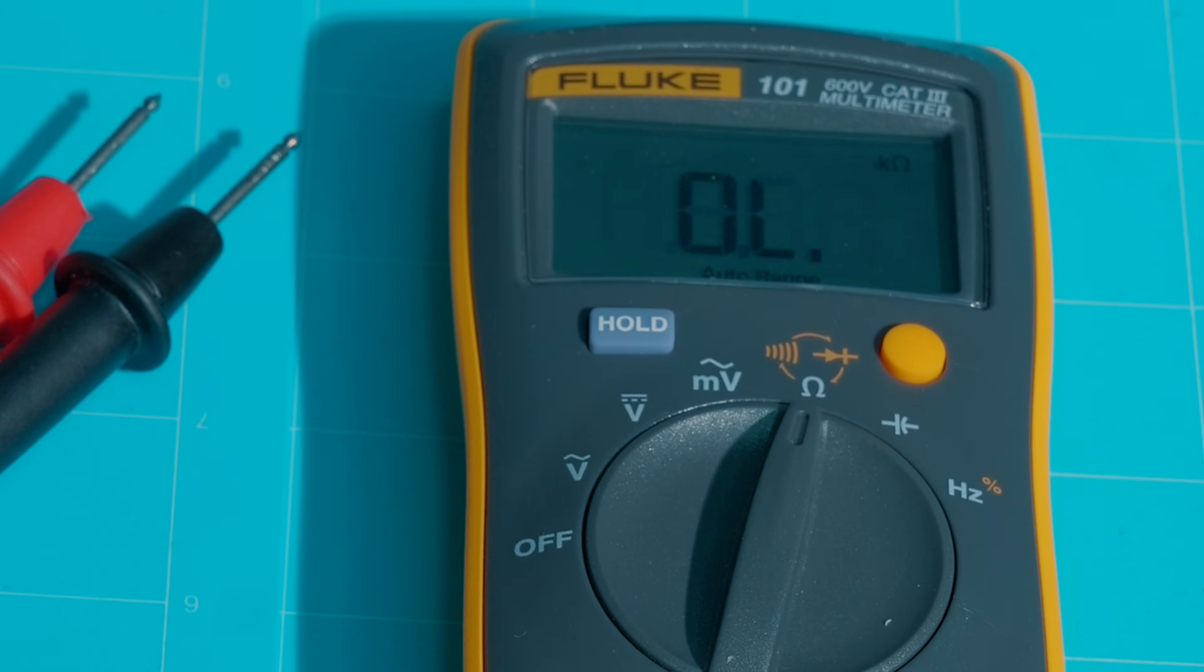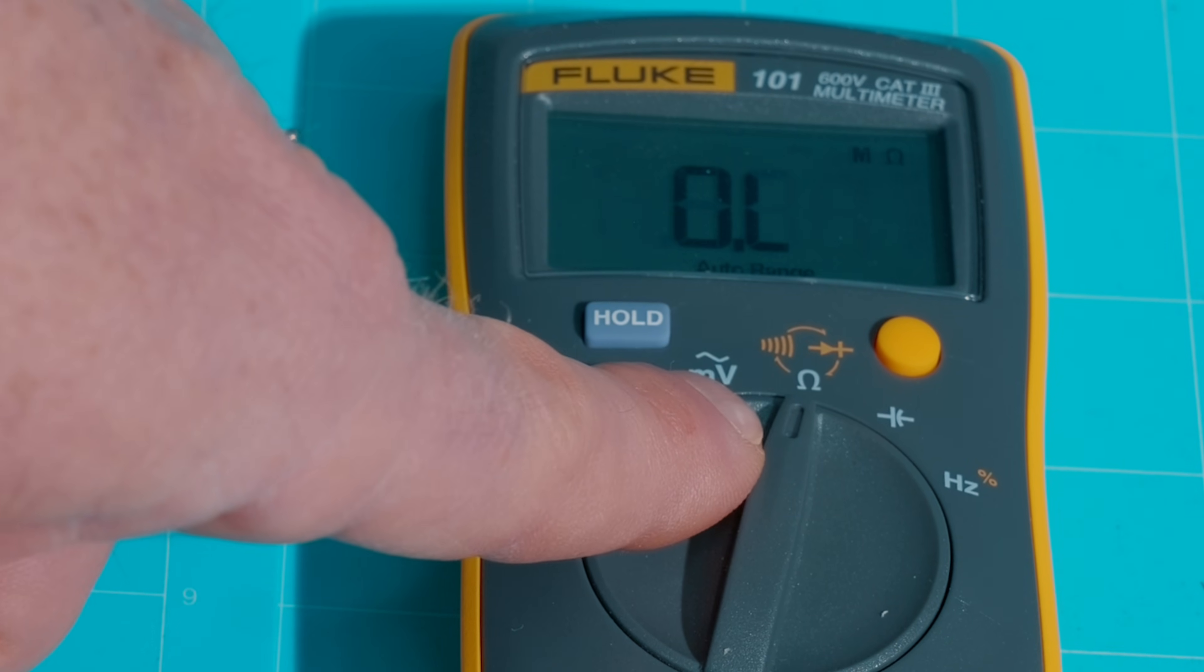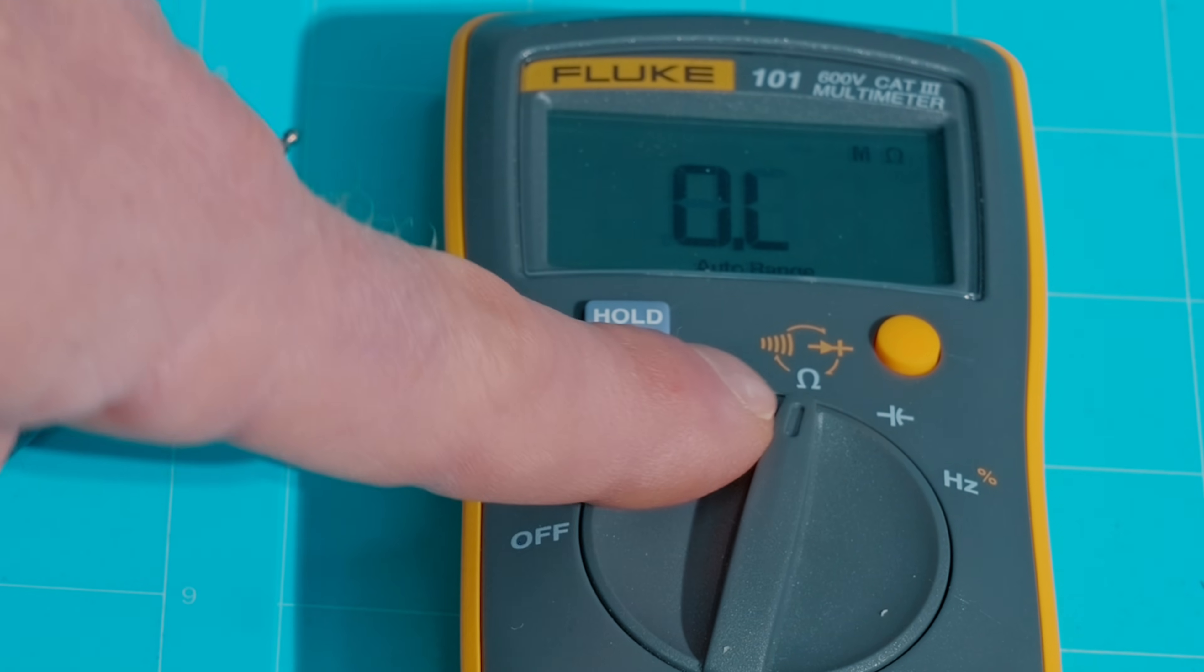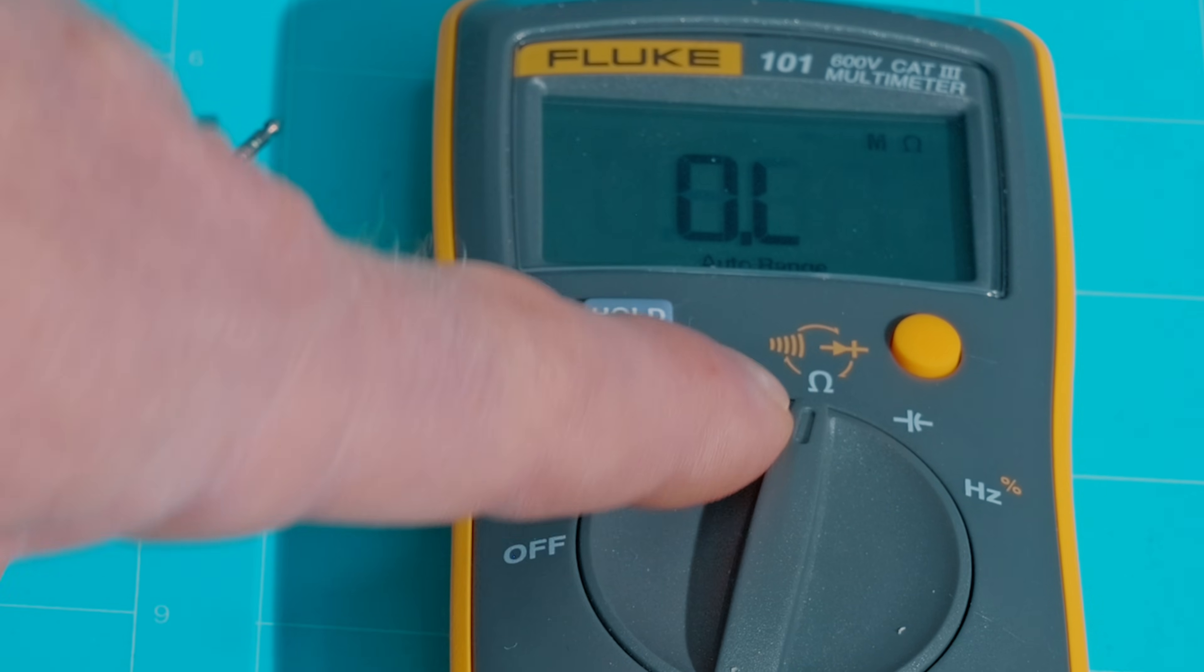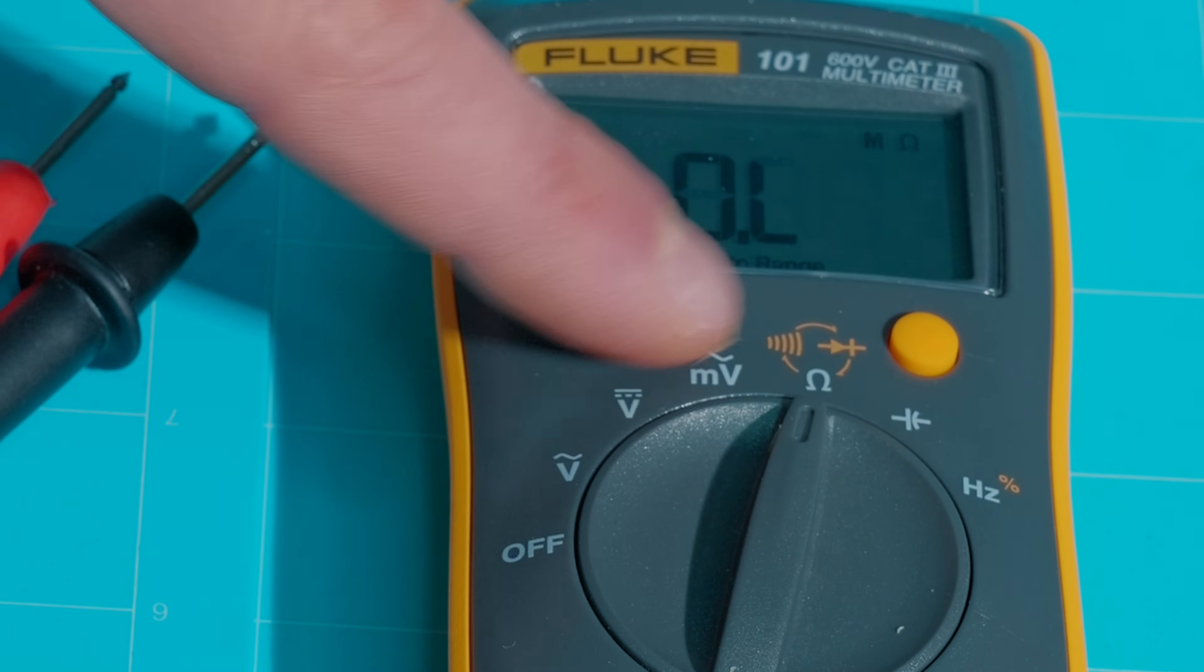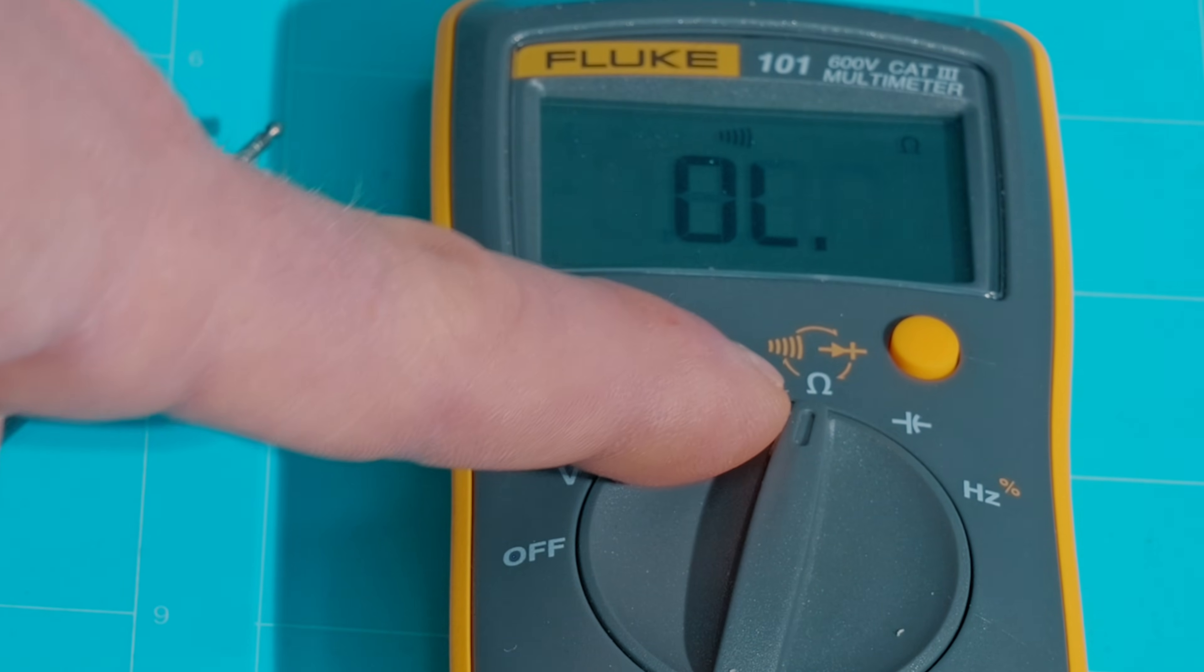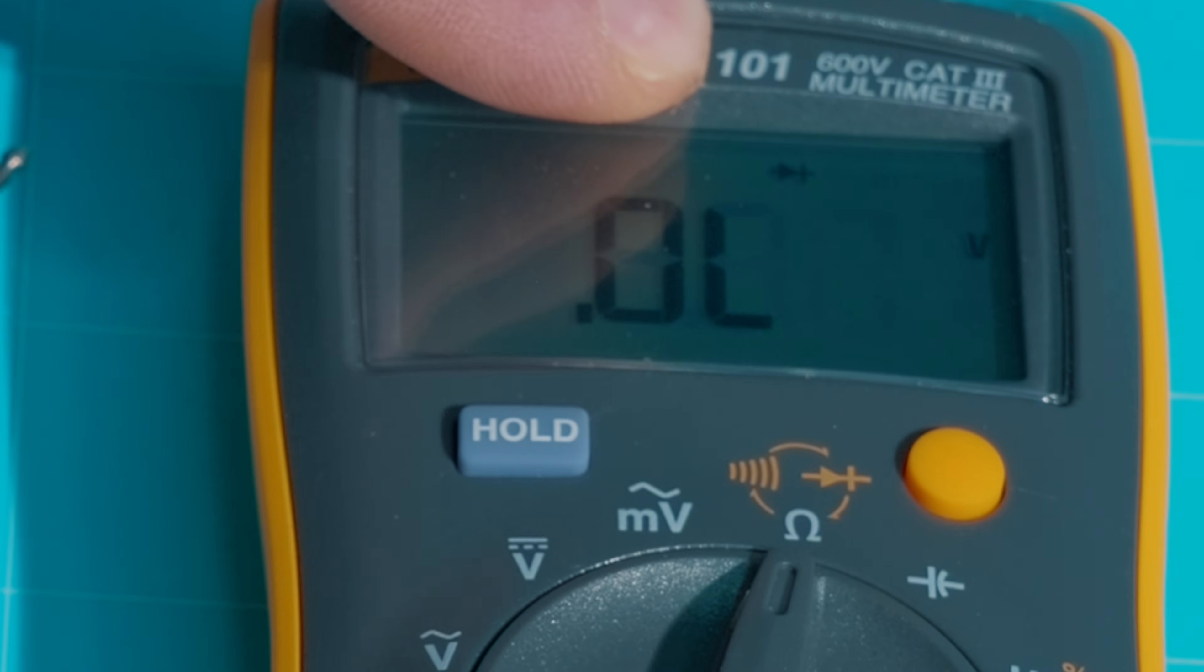So I'll flip up into the next one, which is your omega sign there or your ohms symbol. So this setting here is going to be for resistance, and you can see it does have an orange audio symbol there and an orange diode symbol there. So that means if we're going to hit our orange select button here, it will move into the audible continuity as well as our diode. That's the arrow with the line.